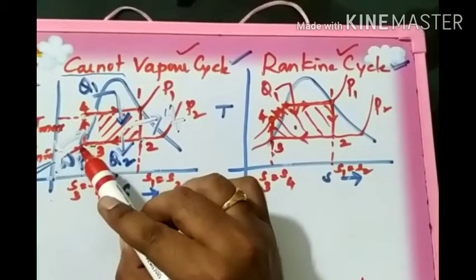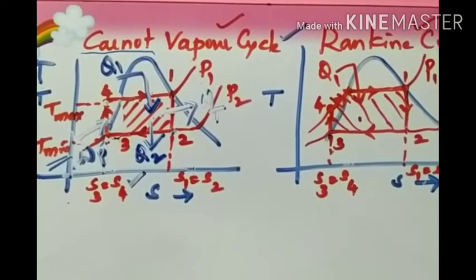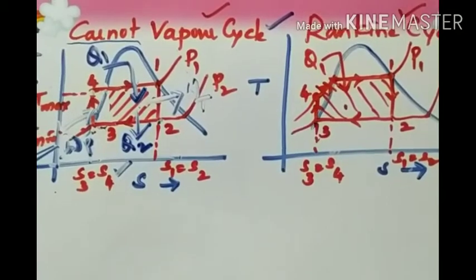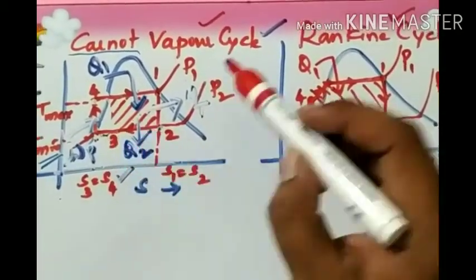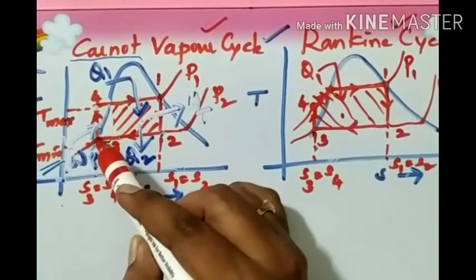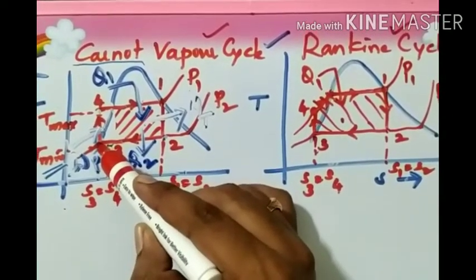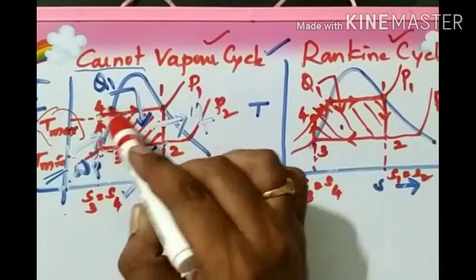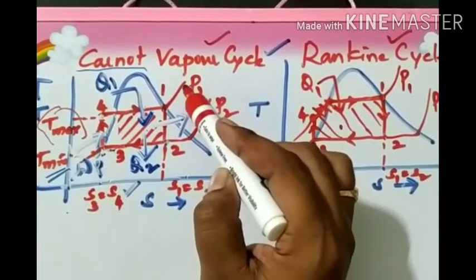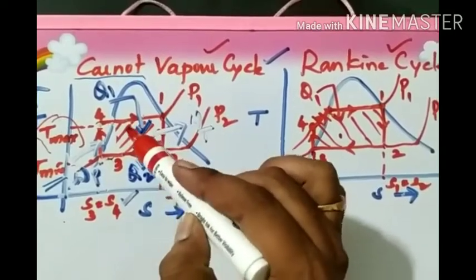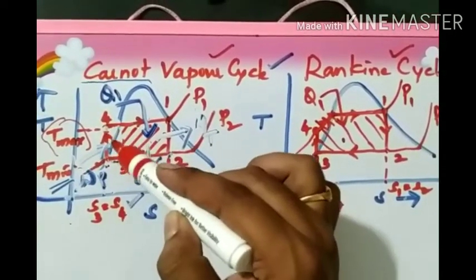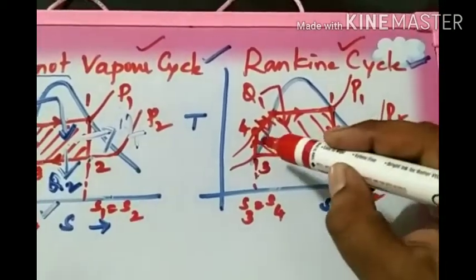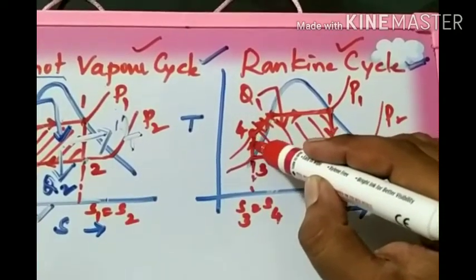From process 3 to 4, which is the compression process, compression has to occur in both cycles. However, looking at the temperatures: in the Carnot cycle, the water temperature has to increase to the maximum temperature existing at boiler pressure. So the compressor has to be designed such that compression occurs to a maximum temperature, whereas in the Rankine cycle it may not attain that maximum temperature.